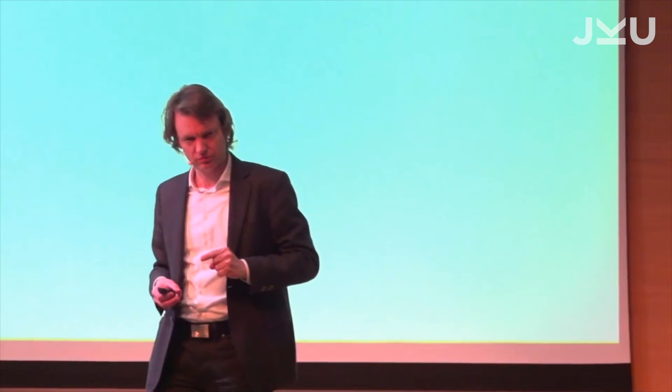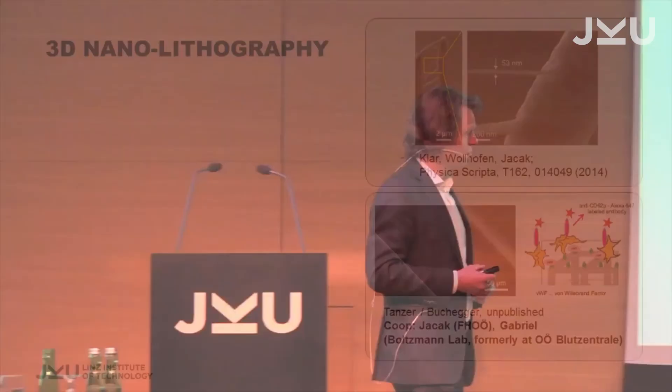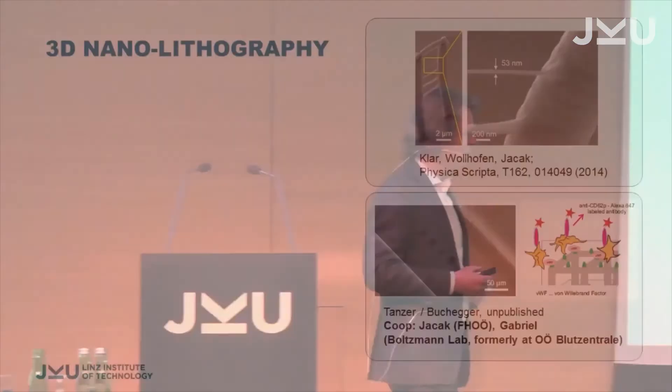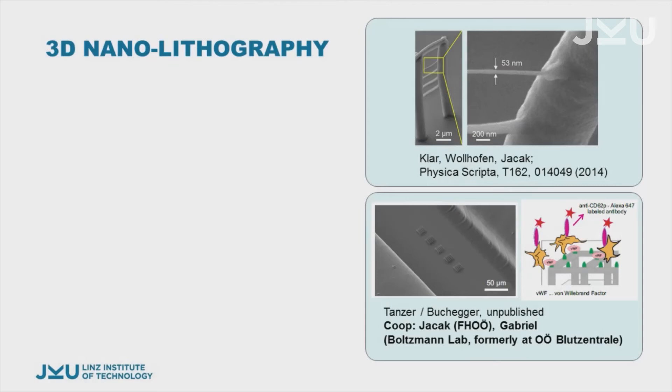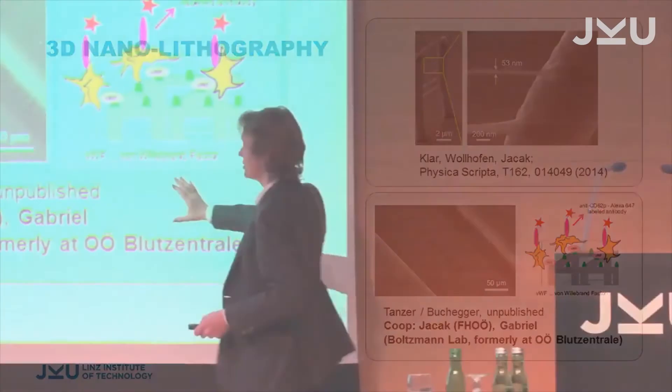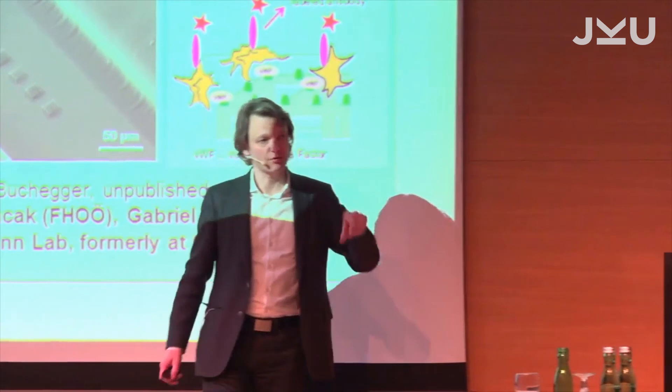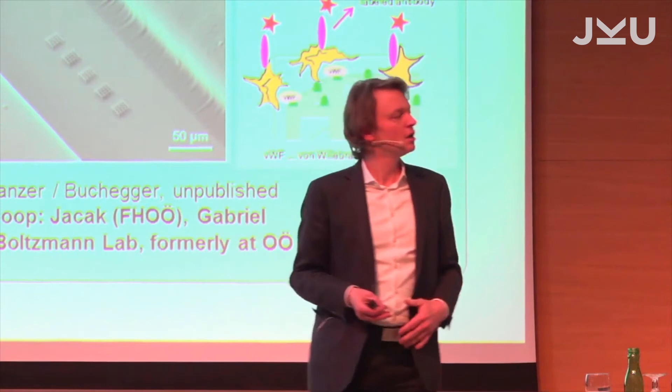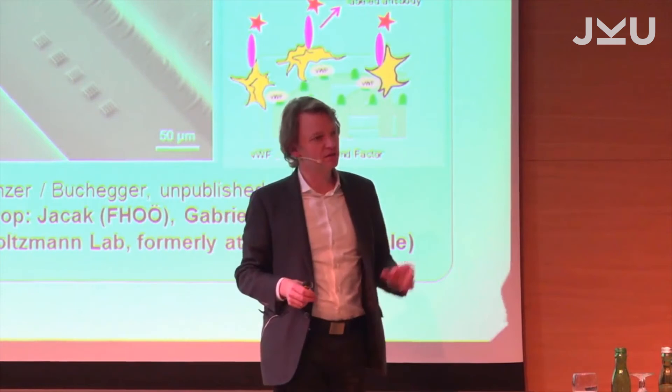A few applications. We have been collaborating with the Blutzentrale here in Upper Austria, where we have these flow channels. We have a flow channel for blood, and the Blutzentrale is interested in blood clotting — if you don't have enough, you have bleeder illness; if you have too much, you get a stroke. We wrote obstacles into the flow channel to make seeds where the blood could make clots, and they use that for their investigations.